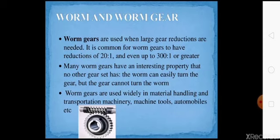Next, worm and worm gear. Worm and worm gears are used where large gear reduction is needed. The worm gear can be easily turned by the gear, but the gear cannot turn the worm. That is why worm wheels are used in large gear reduction.